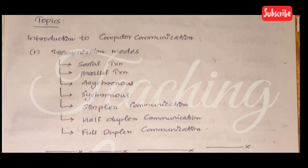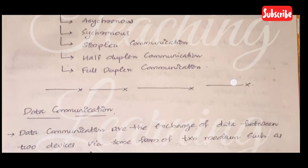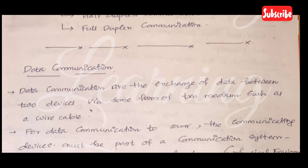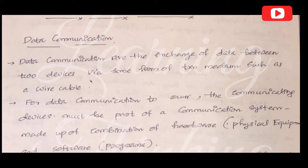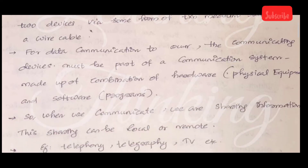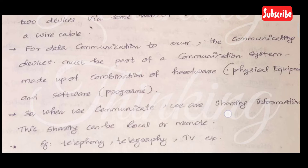Simplex communication, half duplex communication, and full duplex communication. Data communication is the exchange of data between two devices via some transmission medium such as wire or cable. For data communication to occur, the communicating devices must be part of a communication system made up of a combination of hardware such as physical equipment and software such as programs.